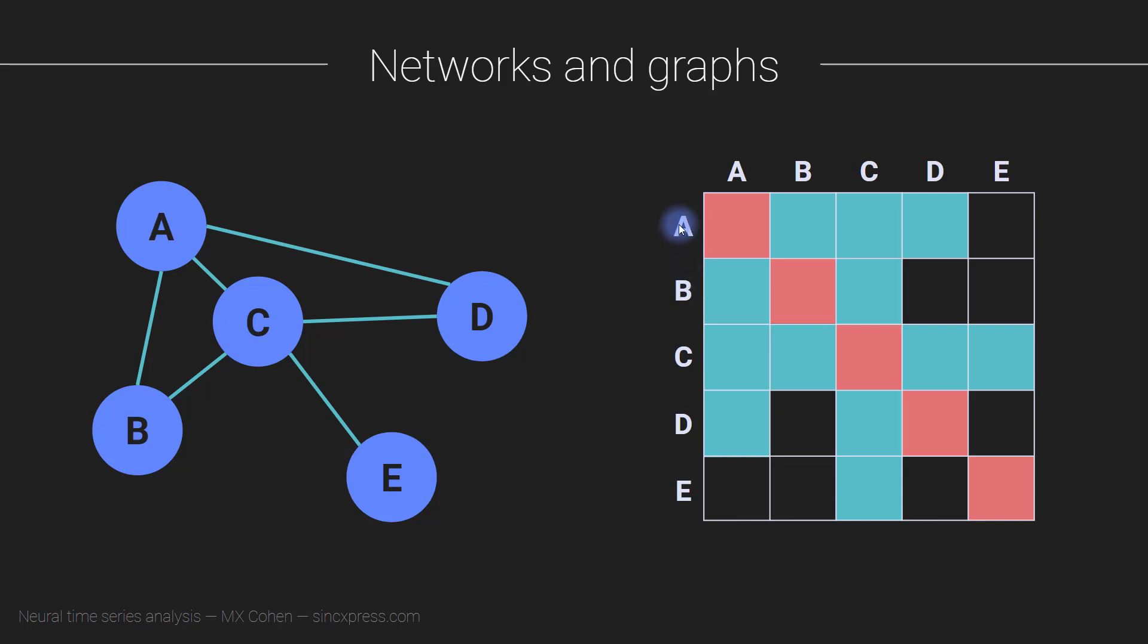This is a non-directional or symmetric connectivity matrix. There's no arrowheads drawn, so B is connected to A and that means A is also connected to B. Whatever you see on the lower diagonal, you will see mirrored on the upper triangle above the diagonal.